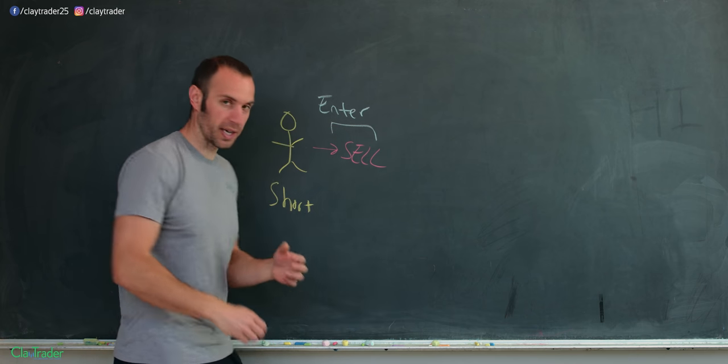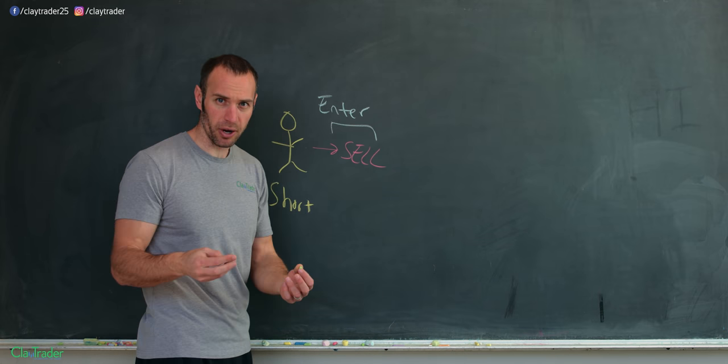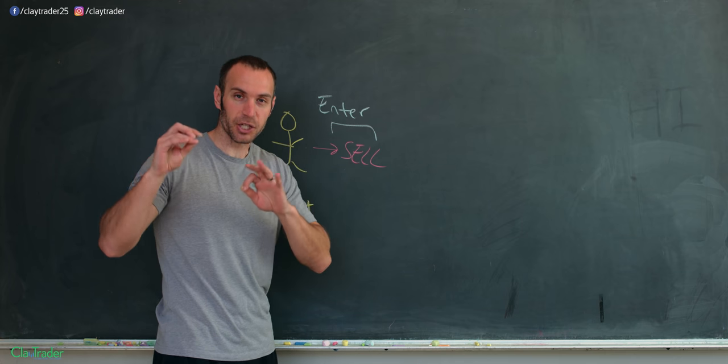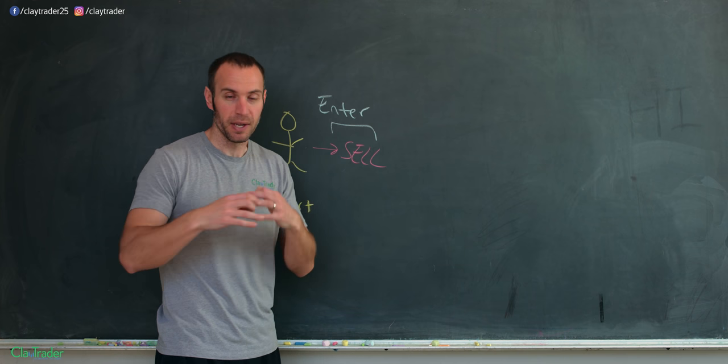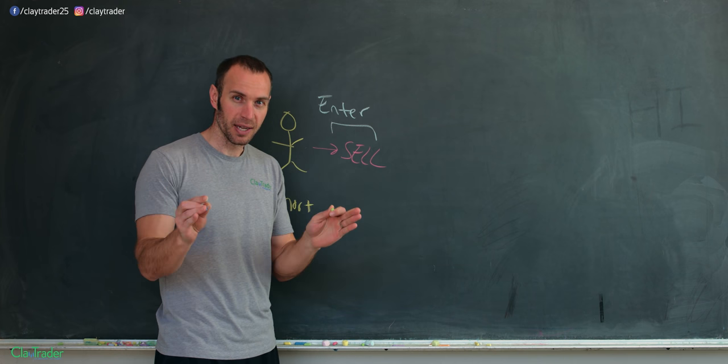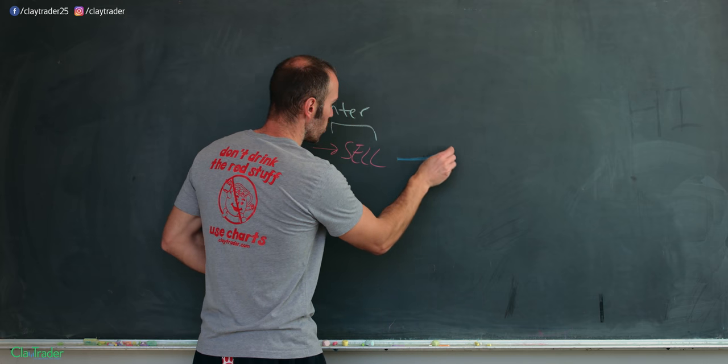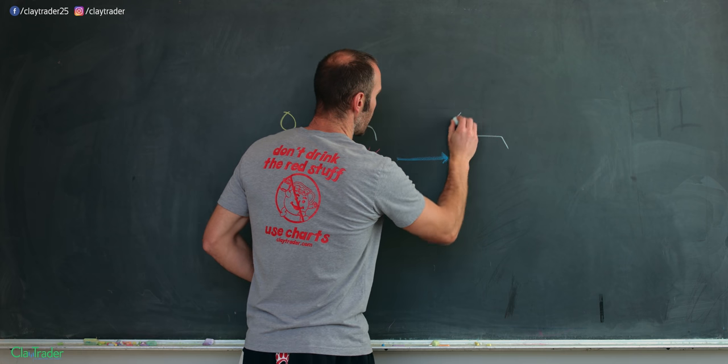Well, like I said, what gets lost in the shuffle is that, and not to insult your intelligence, but you know a trade has two parts, right? You have the entry and then you have what? You have the exit, right? You need to actually get out of the trade in order to make your money or take the loss. But a trade is not complete until you enter and then exit. So over here, we now have the exit.